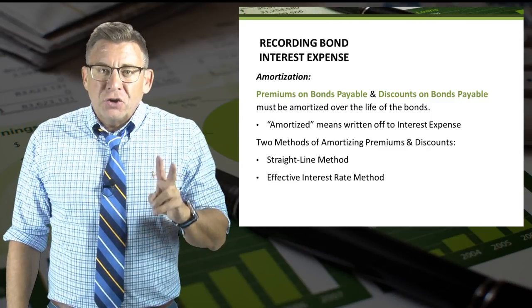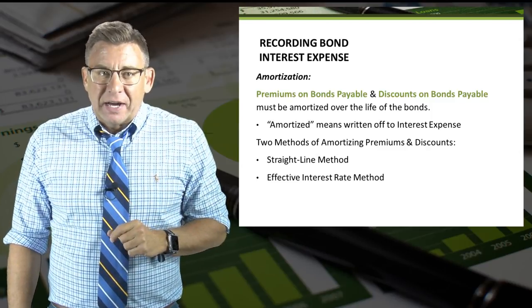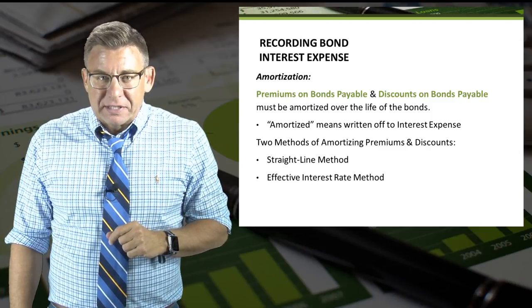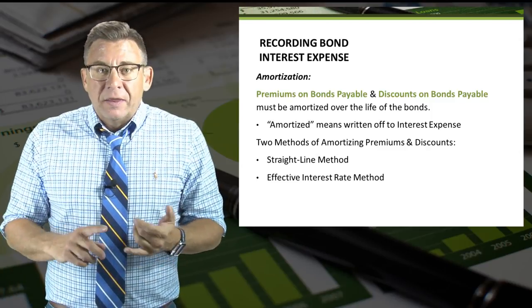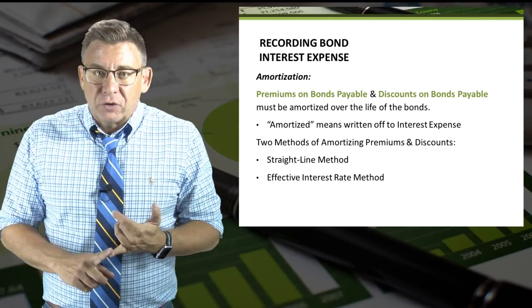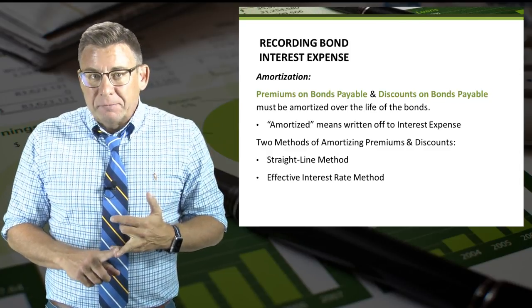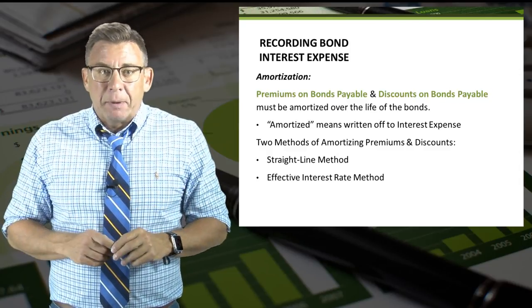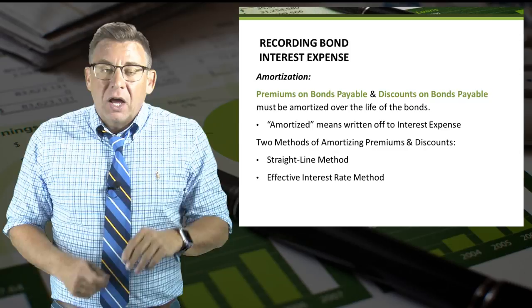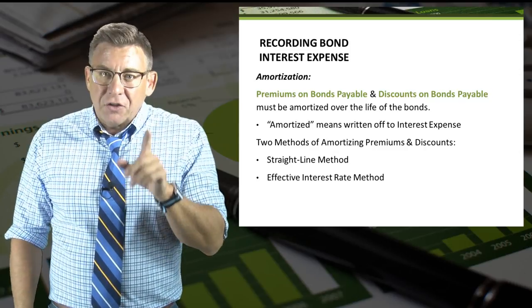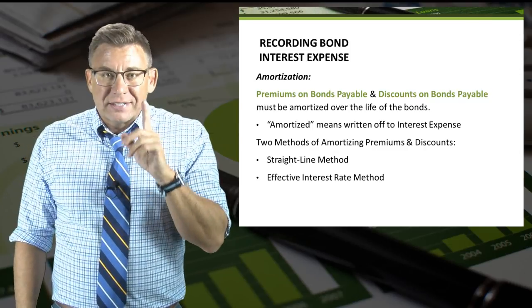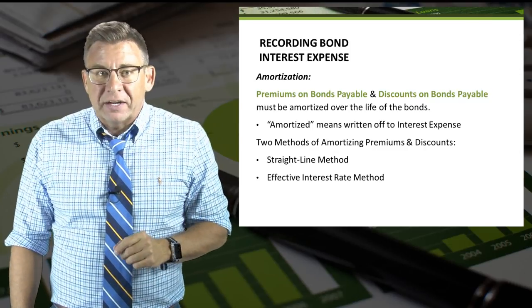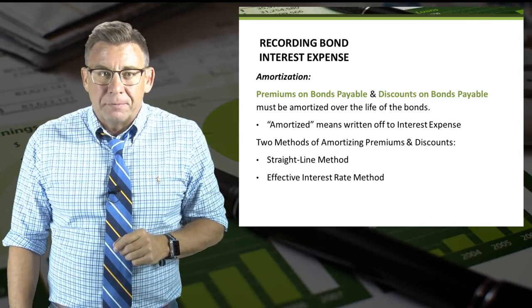There are two methods of amortizing premiums and discounts: the effective interest rate method and the straight-line method. The straight-line method is not GAAP approved unless the results are similar to the effective interest rate method.